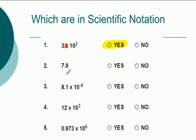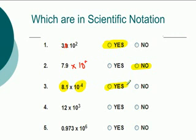7.9 — well, it's missing something. It's missing 'times 10 to the something,' so this is not in scientific notation. 8.1 times 10 to the negative 4: it has a decimal number and it has a 10 raised to a power, so yes, it is in scientific notation. 12 times 10 to the third — well, 12 is not a number from 1 through 10; it's over 10. So this is not in scientific notation.